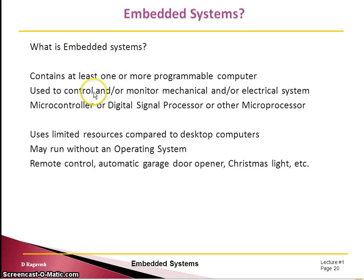What is an embedded system? It contains one or more programmable computers. In some places, the task could be achieved with the help of a single computer — like a small Christmas light, an automatic door opener, or a remote control. These are all very simple, where you can achieve the task with the help of a single computer. That single computer is going to control or monitor the system. It is primarily meant to control an electrical or mechanical system. Whatever is in this category, we refer to it as an embedded system.